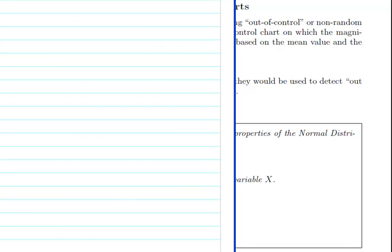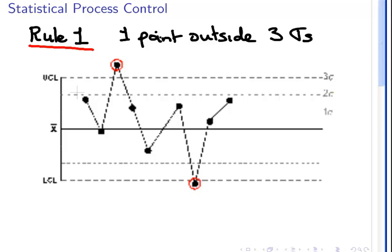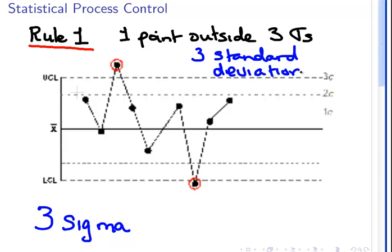So, let's look at some of the rules here. This is rule one. This is what they commonly call the three sigma rule. It's essentially one point outside three sigma, or three standard deviations. In this case, there's actually two points that are outside three standard deviations, but it's just emphasized that it is either side. So, what is the probability of this point being outside, what's the probability of a point being outside three standard deviations?